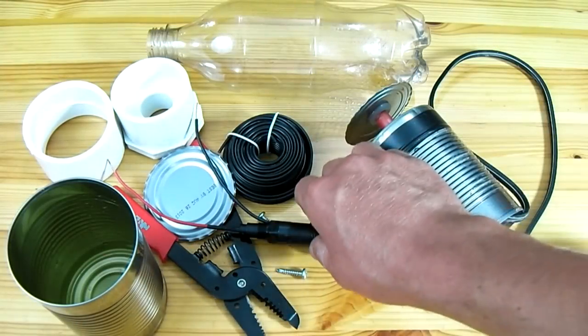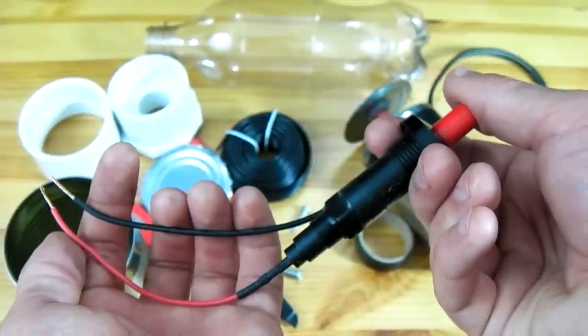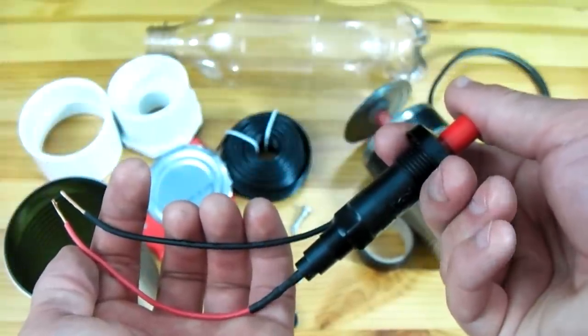The first step to making this mine will be to buy a grill igniter, such as this one here. This type of igniter creates a spark between the two wires when the button is pressed.